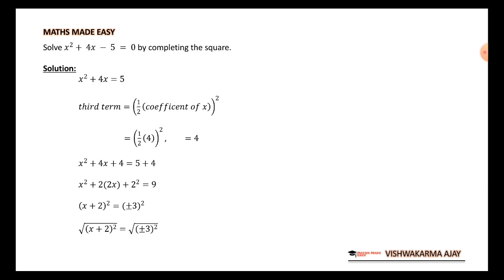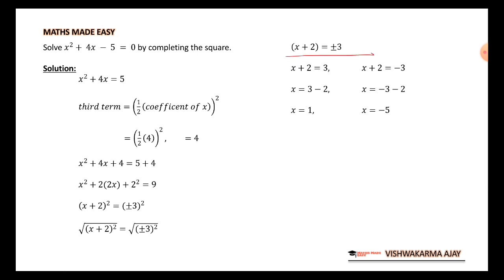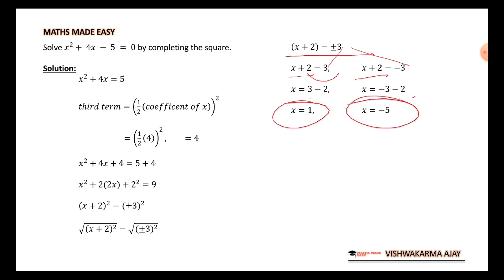Taking square roots on both sides, the square root and the square cancel each other, leaving: x + 2 = ±3. This gives two equations: x + 2 = 3 and x + 2 = −3. Taking 2 to the other side: x = 3 − 2 = 1, and x = −3 − 2 = −5. So the values of x are 1 and −5.